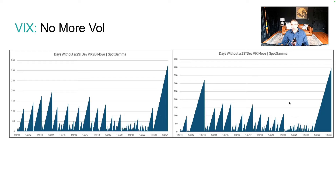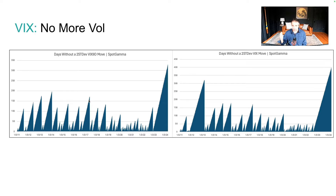This encompasses some pretty interesting times, like the March 2023 bank crisis. It's a very similar story with the VIX itself, where you have to go back to 2012 for anything that looks like this. The 2017 period is right in the middle here — one of the bigger spikes.